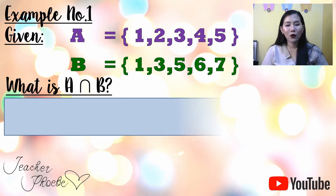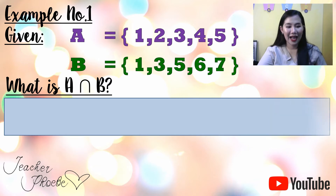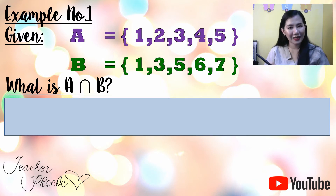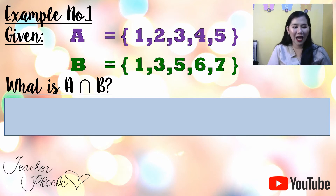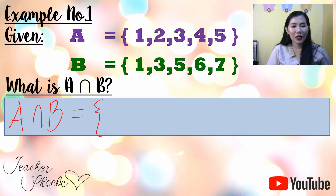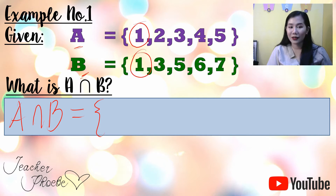What we look for are the elements that appear in both A and B. Take note — common means the elements that are the same, that both A and B have. However many they are, you write them down. So let us check: looking at A and B, we find that 1 is common, so we write that down. Next, 2 — not common, so we don't write it.